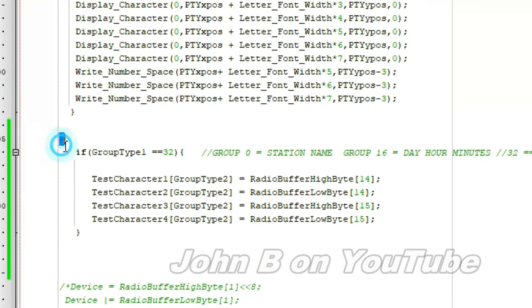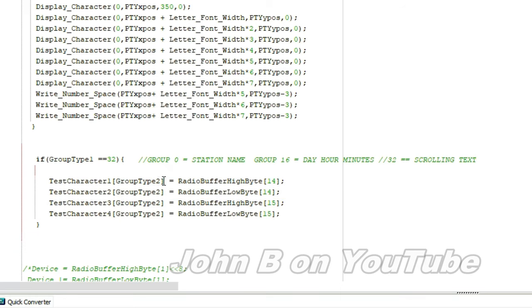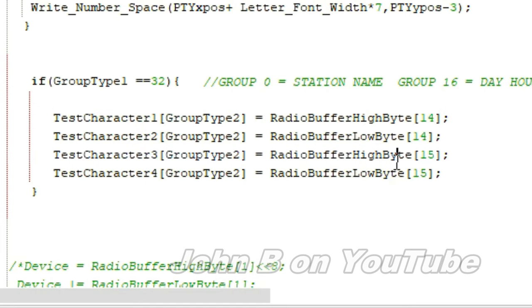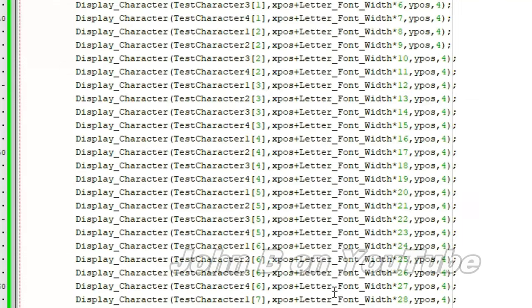This is a simple scrolling text. I've got these four characters and four numbers in there which are the group type positions. Simple as that. Radio buffer high byte 14, low byte 14, high byte 15 and low byte 15. Those are the four registers, four character arrays and simply display them down there.